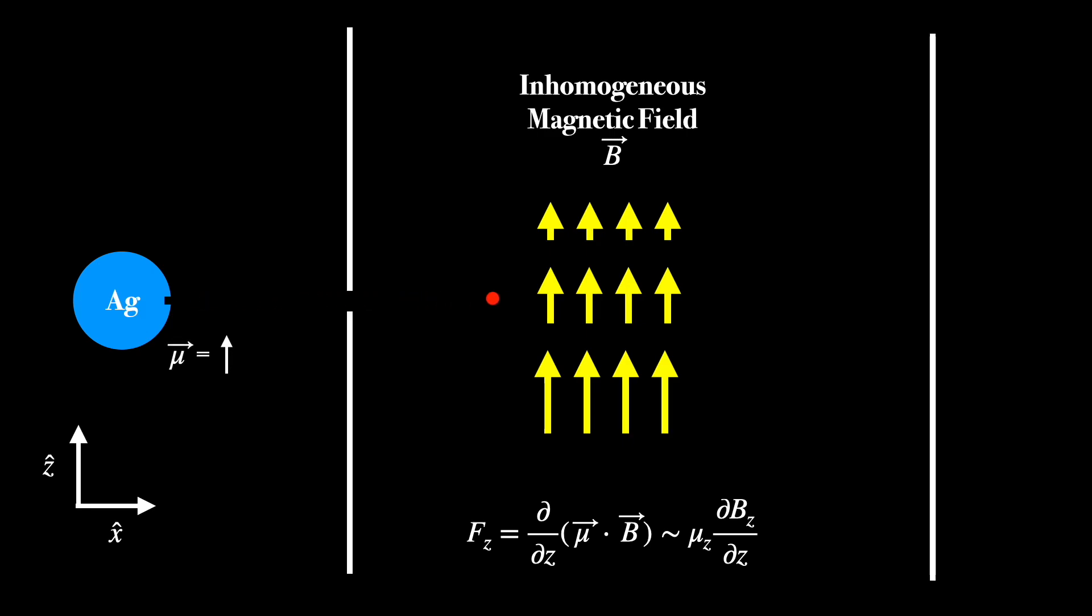Now in the framework of classical mechanics, we would expect there to be all sorts of magnetic moments for the silver atoms in this oven. And since the force that the atoms experience is directly proportional to the direction of the magnetic moment in the z direction, then we expect to eventually get a distribution of impacts on the screen that is evenly spread over some region. So it should look something like this.